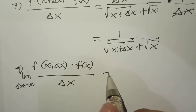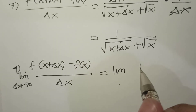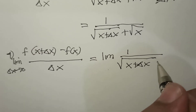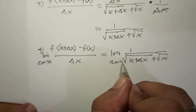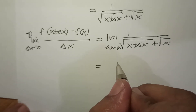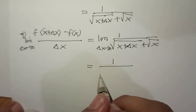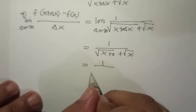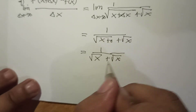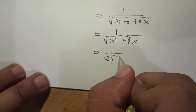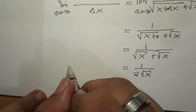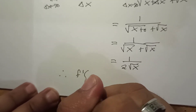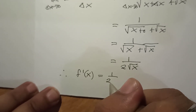Taking the limit as Δx approaches zero: 1 / (√(x + Δx) + √x) becomes 1 / (√(x + 0) + √x) = 1 / (√x + √x) = 1 / (2√x). Therefore, the first derivative of f(x) = √x is f'(x) = 1 / (2√x).